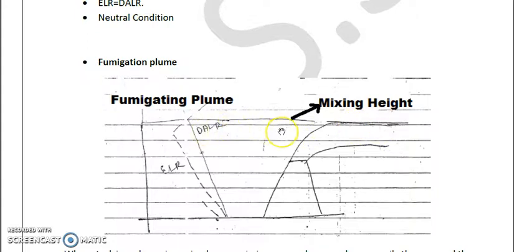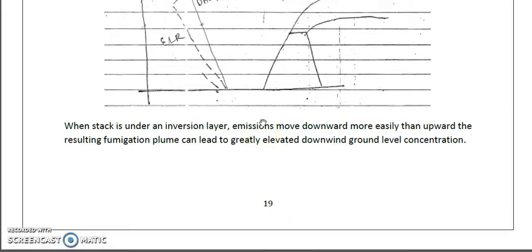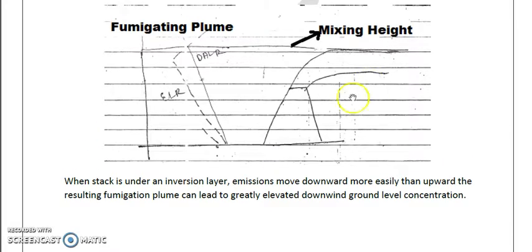Emissions move downward more easily than upward. That's resulting in fumigation plume, and this can also lead to greatly elevated downwind ground level concentration of pollutant, because the inversion layer as you can see is formed above the stack where the mixing height is above the stack.